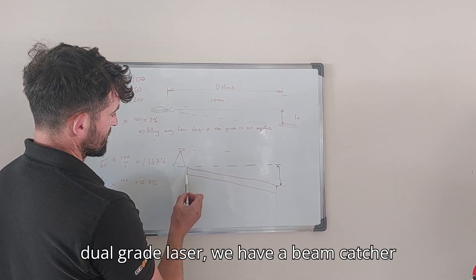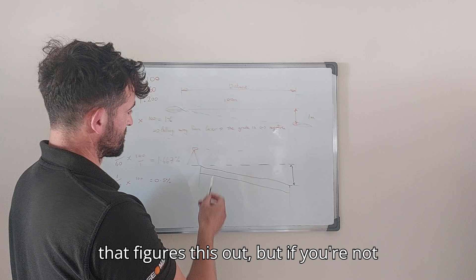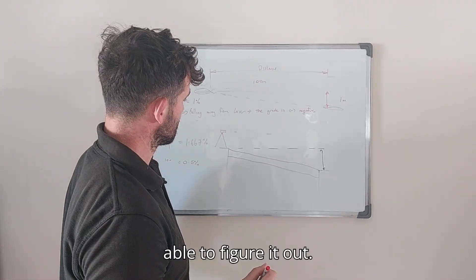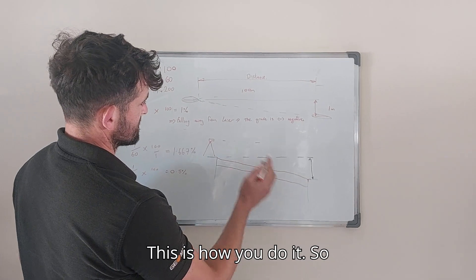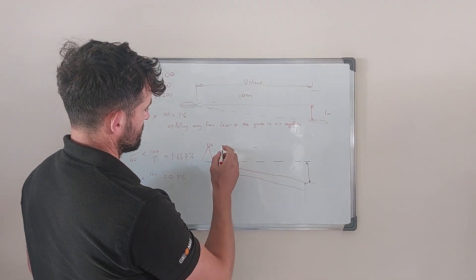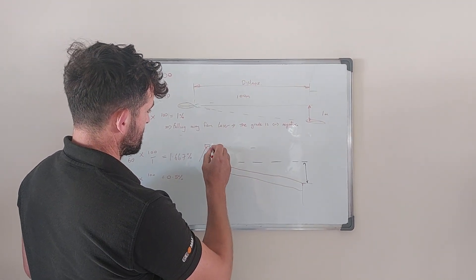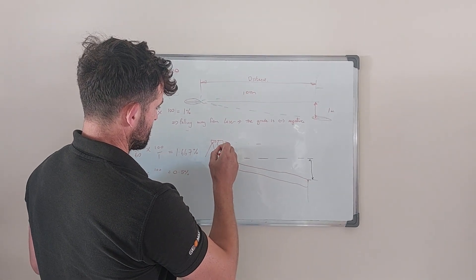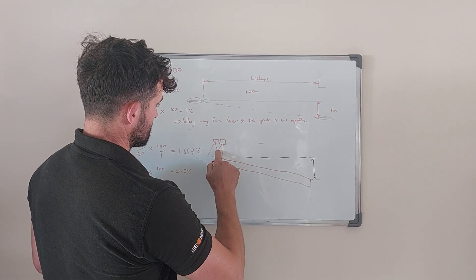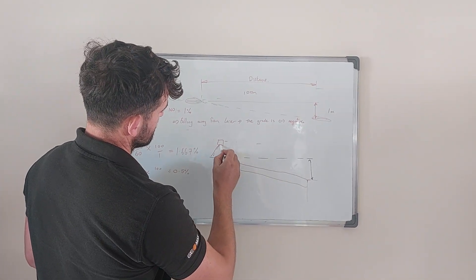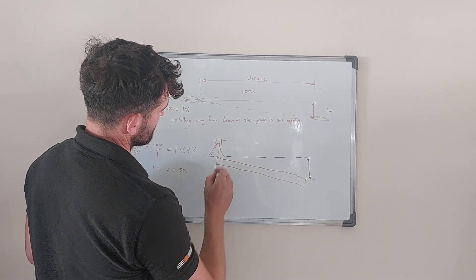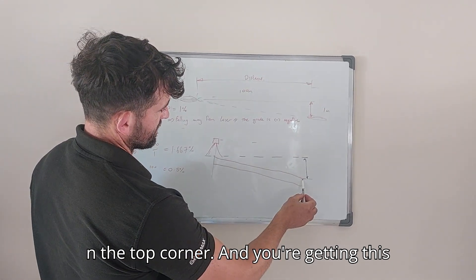Now, we have the dual grade laser, we have a beam catcher that figures this out. But if you're not able to figure it out, this is how you do it. So that distance there, the laser should be across here actually. Line the laser up with the top corner and you're getting this distance here.